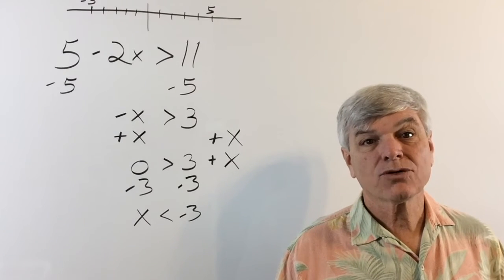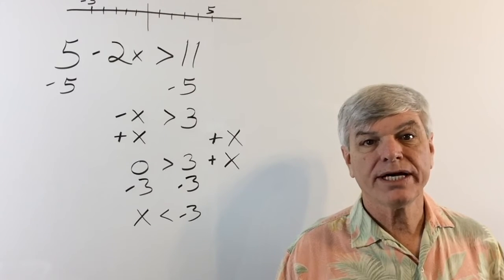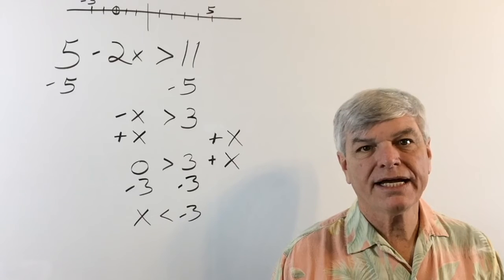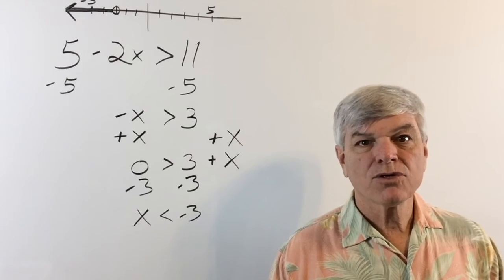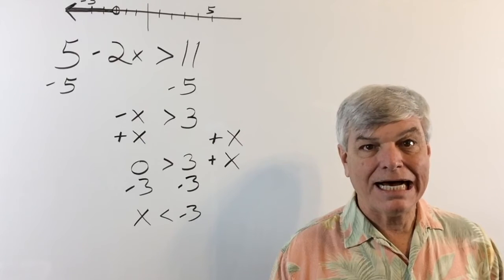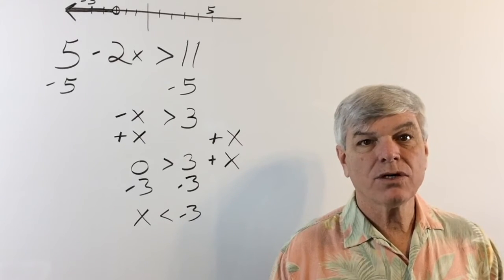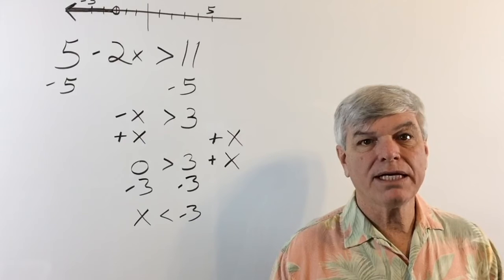Let's graph that. The less than symbol means we're going to circle negative 3 and zoom off into infinity in a negative direction. So we're starting at negative 3 — it is not negative 3, it is less than negative 3. It could be negative 4, negative 5, on off to negative infinity, and that's what that arrow means.